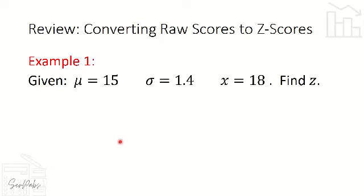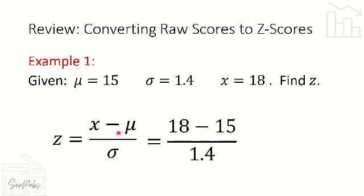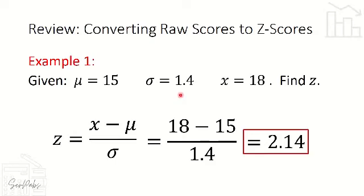Let's review the process of how to convert a raw score into a z-score. For example, we have a mean (mu) of 15, a standard deviation of 1.4, and a raw score of 18. Find z. Using the formula z = (x - mu) / sigma, we substitute: (18 - 15) / 1.4, which equals 2.14.